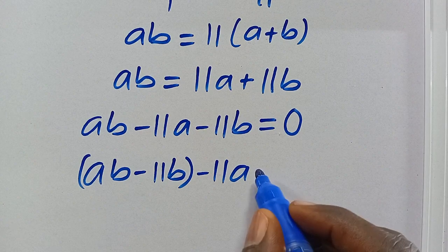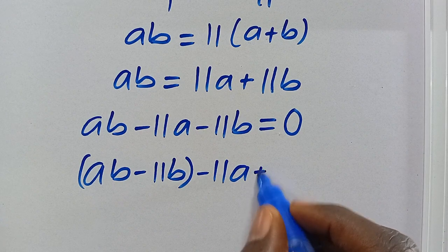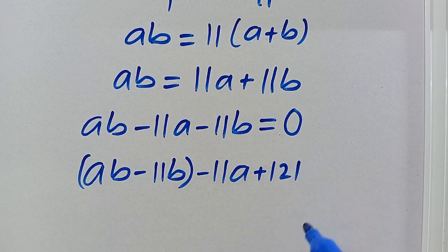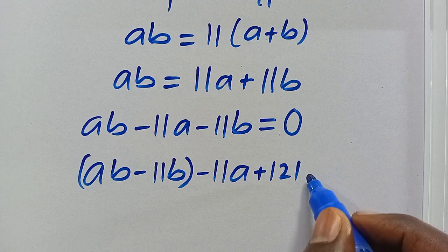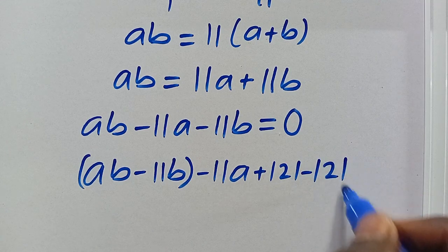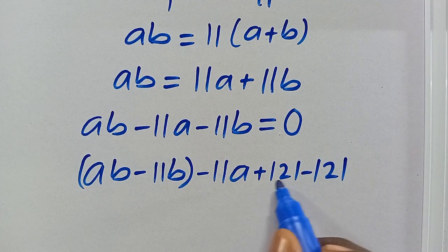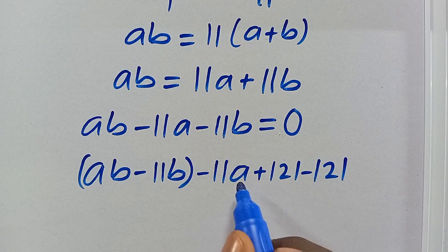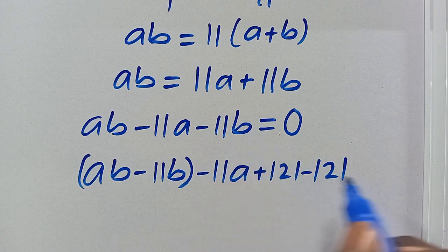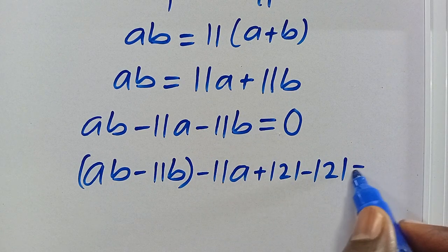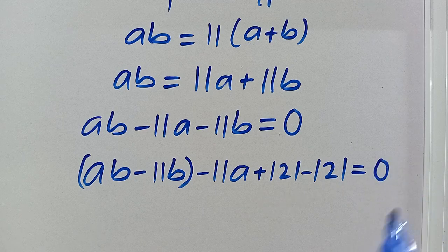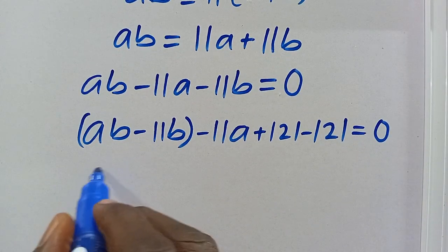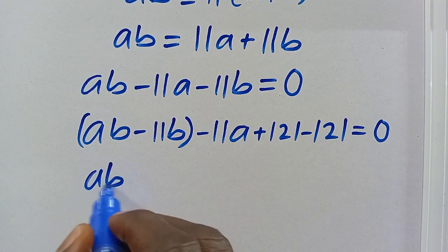Now let's do some manipulation — let's add 121 and subtract 121, which gives us zero net change, so it doesn't affect the equation. We set it equal to zero, giving us AB minus 11B minus 11A plus 121 equals 121.